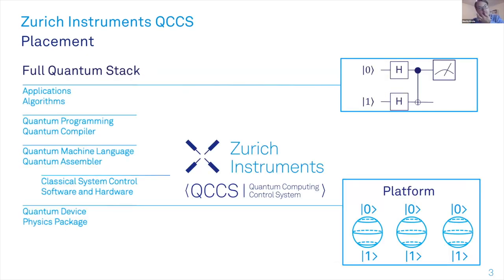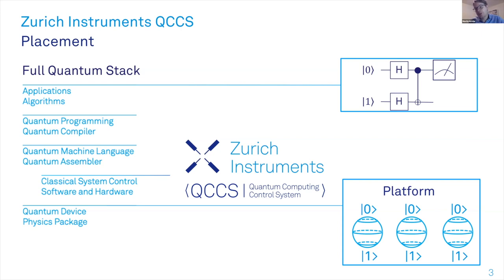This sketch shows the full quantum stack in a simplified manner. At the very top is the algorithm layer, and at the very bottom is the quantum device. We at Zurich Instruments are in between those two layers. Physicists and business people are most interested in the top layer, while the bottom layer is of high interest to experimental physicists. The layers in between are often seen as just engineering problems, but we believe these engineering problems must be solved for scalable quantum computers.